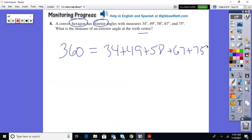One, two, three, four, five. All subtracted off of 360 and you're left with 77.